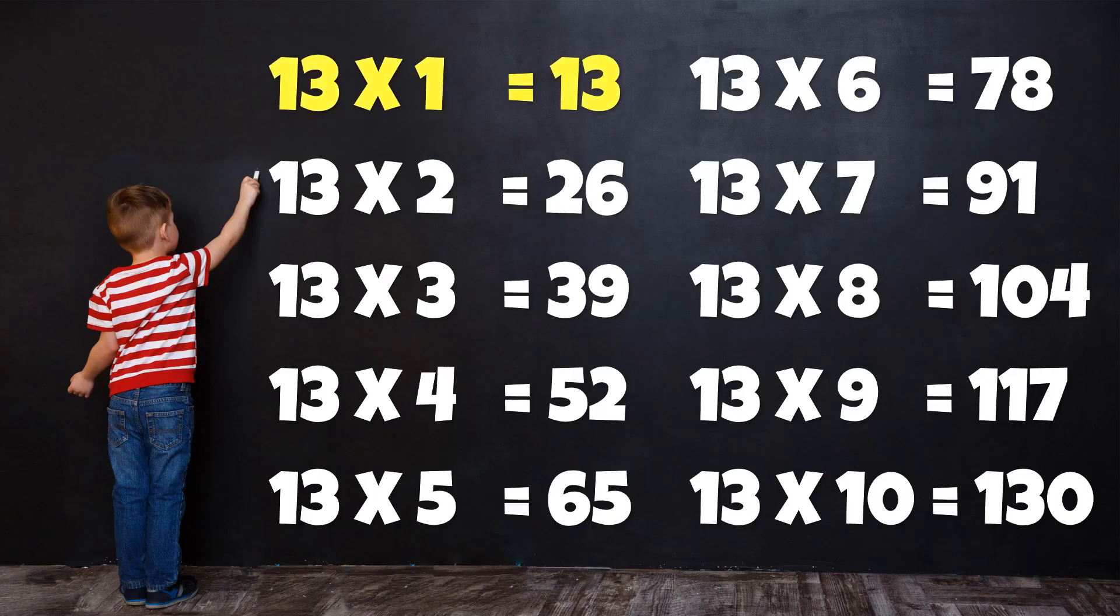Table of 13: 13 1s are 13, 13 2s are 26, 13 3s are 39, 13 4s are 52.